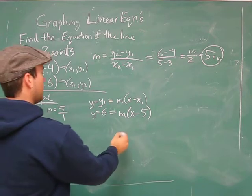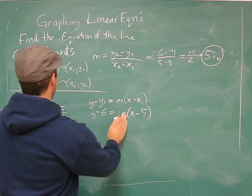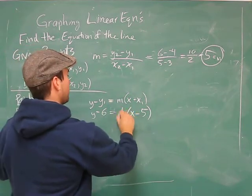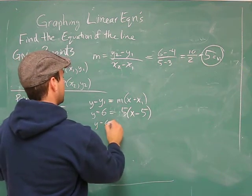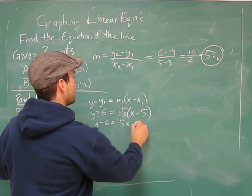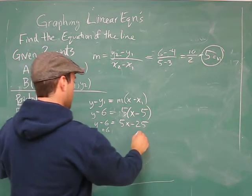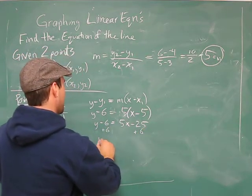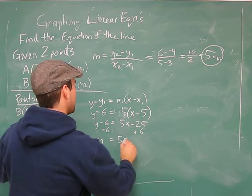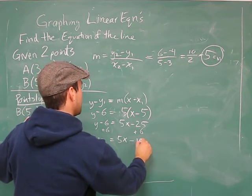There's our 5. So now let's just figure it out. Well, m is also 5. So we have y minus 6 equals 5x minus 25, and I'll just get rid of that, plus 6. I get y equals 5x minus 19.